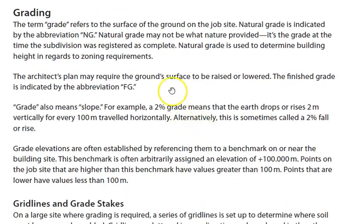Here's a little section on grading. They talk about two types of grading: the natural grade, which may be there before you've done any digging, and then the finished grade is what we're shooting for. They talk about grade interchangeably with the term slope.